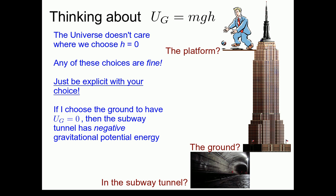If I choose the ground to have zero gravitational potential energy, then points in the subway tunnel below the ground have negative gravitational potential energy. There's absolutely nothing wrong with that. Why is there nothing wrong with negative potential energy?